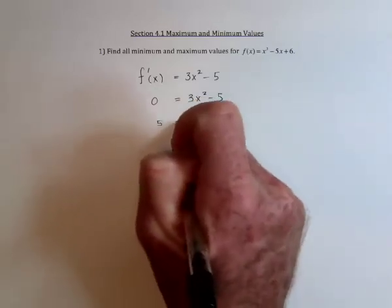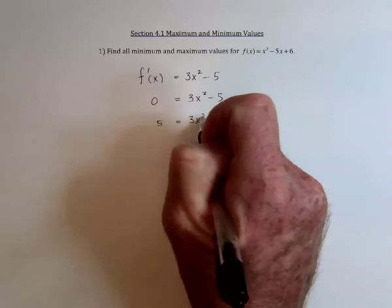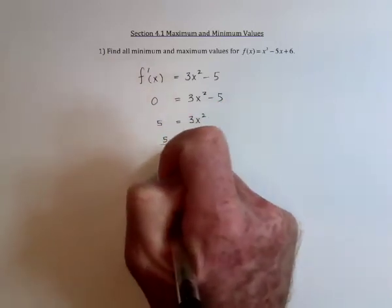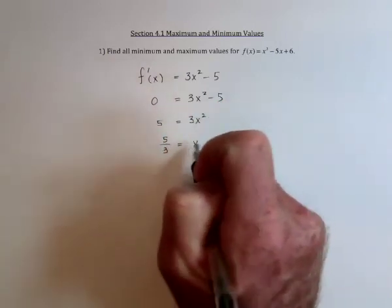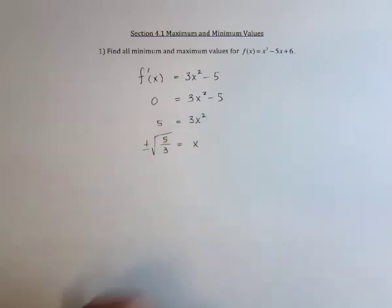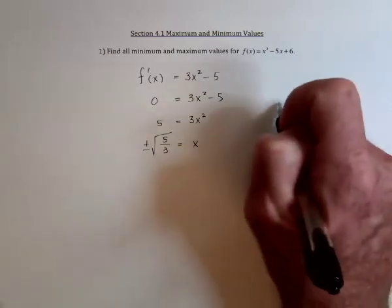So add 5 to both sides, divide by 3, and then at the end, take the square root, and we get positive or negative the square root of 5 thirds.